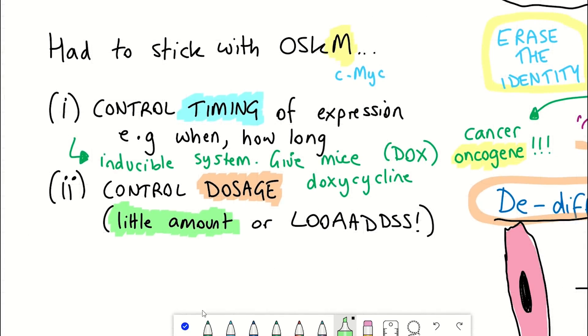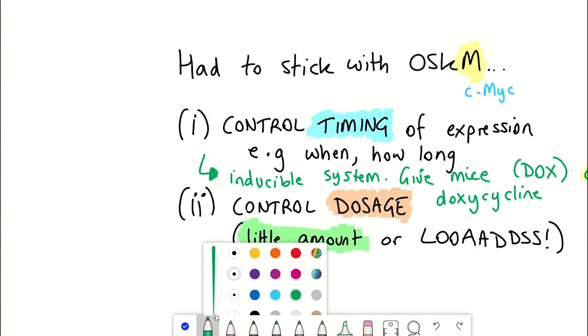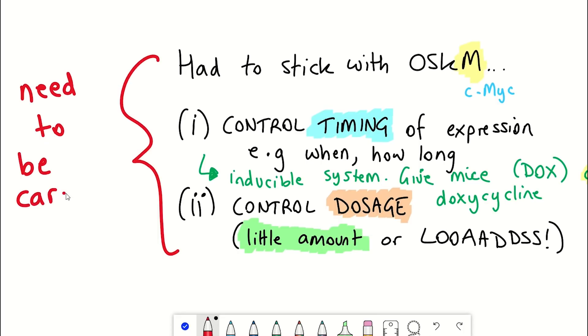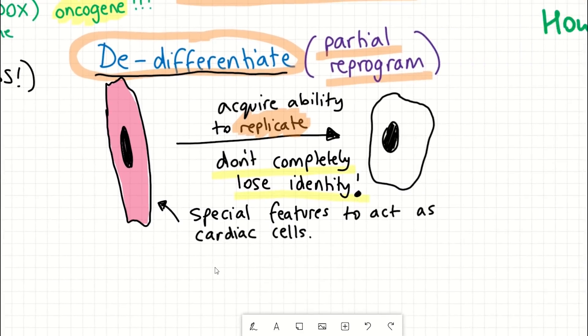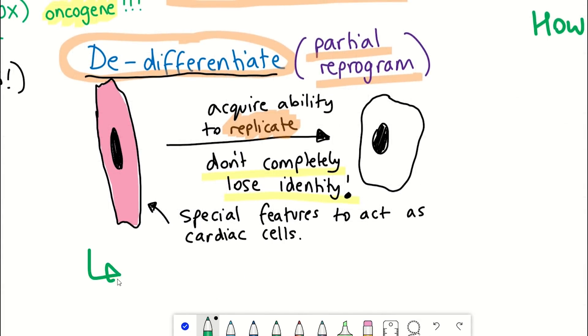So, so far pretty much follows what we thought. You have to be careful regarding how much of these factors are expressed to get just the right amount of reprogramming before a cell loses its identity completely and goes out of control. But does this partial reprogramming, this short-term expression, have any benefits for repairing the heart after damage?